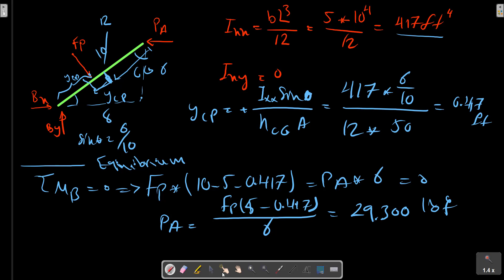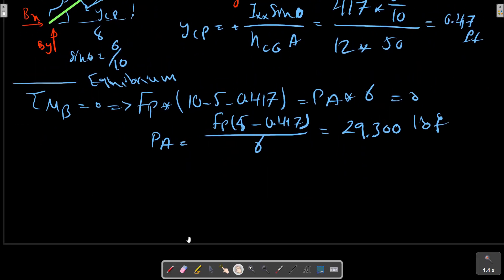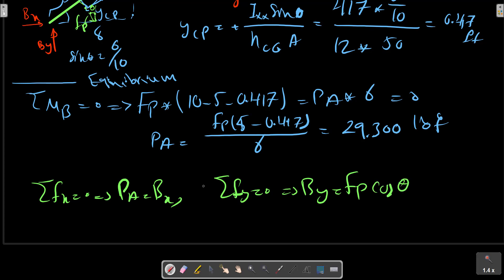With this calculation we can now have equilibrium in x and y direction to calculate reaction on B plus Fp. The reaction on B. This is the end of the problem.